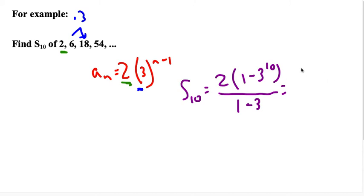What is this? Well, 3 to the 10th is a big old number. 3 to the 10th, as a matter of fact, is 59,049. So this is 2 times 1 minus 59,049 over, well, this is 1 minus 3, or negative 2. Now, something good is about to happen here. If I have a bunch of positive numbers and I add them up, I better get a positive, right? 1 minus 59,049 is going to be negative divided by another negative. Yay!